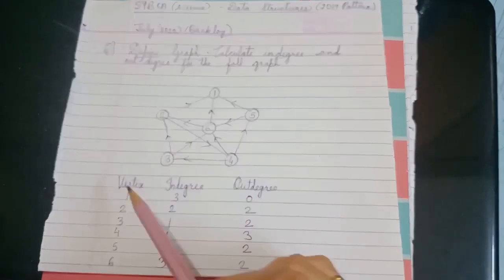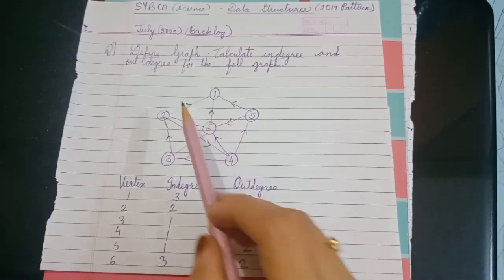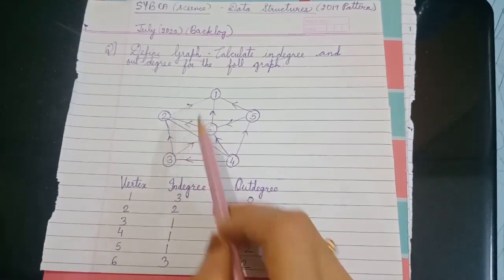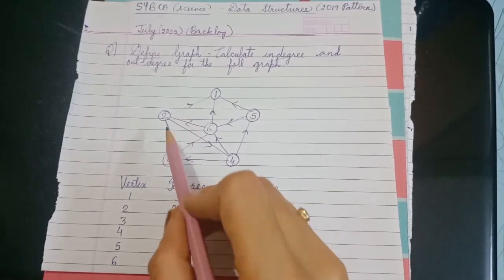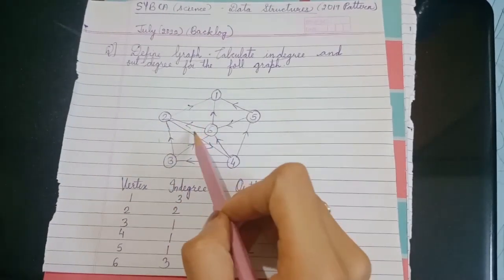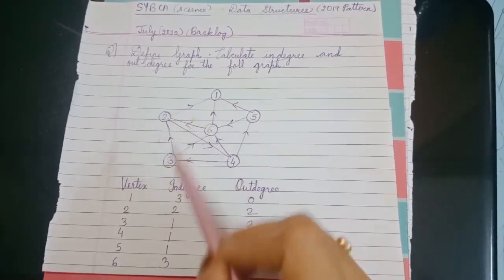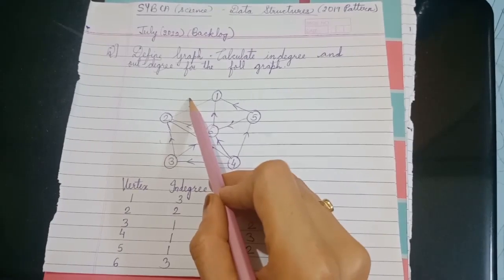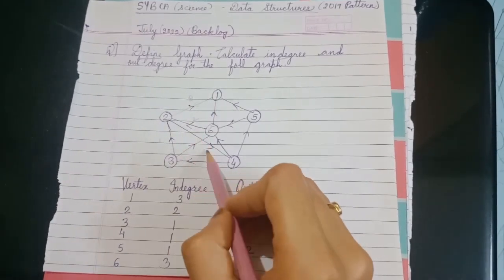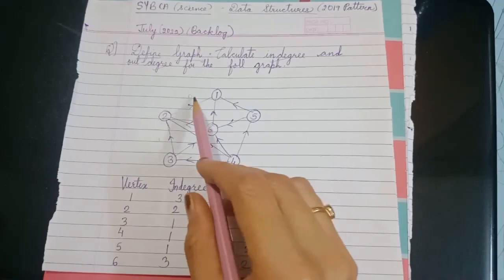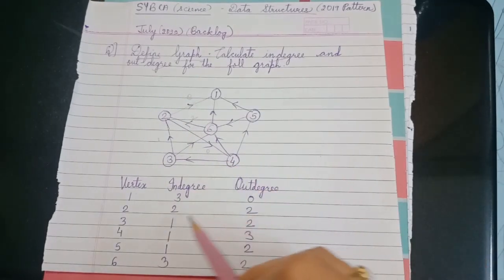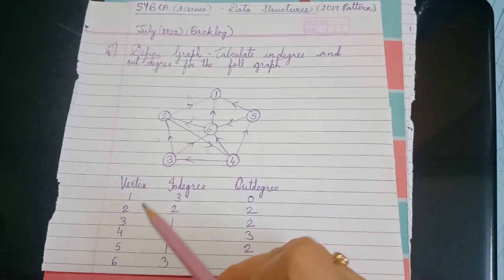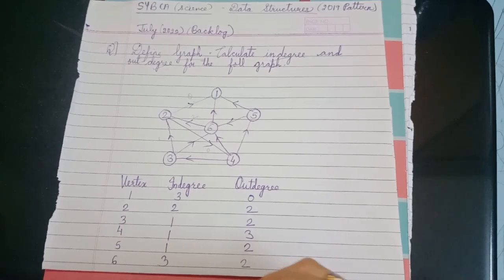Similarly, we will calculate for all other vertices. For vertex two, there are total four edges. In-degree: there are two edges coming in, so in-degree is two. Out-degree: there are two edges going out, so out-degree is two. So for vertex two, in-degree is two and out-degree is two.